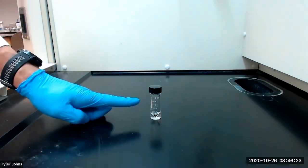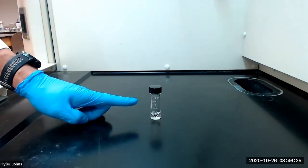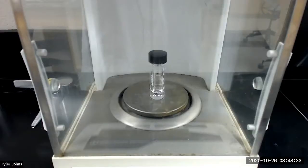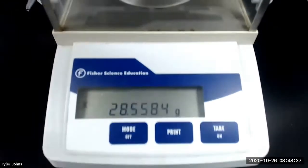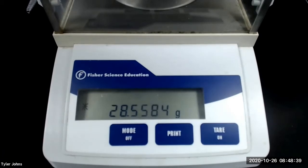To begin, we will pre-weigh a 5ml conical vial. The mass of our pre-weighed 5ml conical vial is 28.5584 grams.